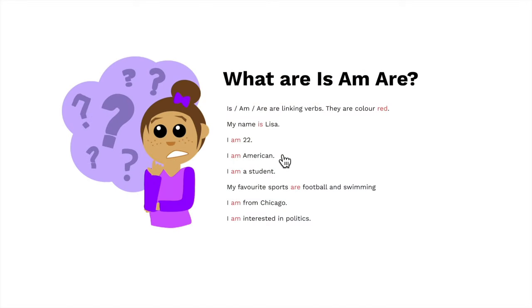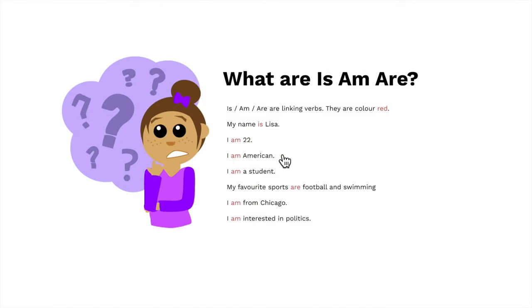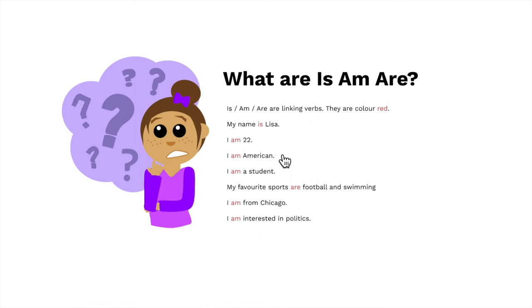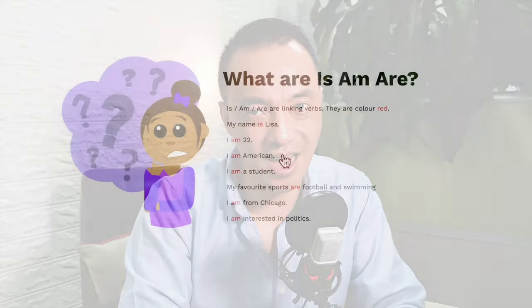What is IS/AM/ARE? IS/AM/ARE are linking verbs — they are actually colored red. For example: my name is Laser. I'm 22. I'm American. I'm a student. My favorite sports are football and swimming. I'm from Chicago. I'm interested in politics. All of these sentences contain the linking verb IS/AM/ARE.